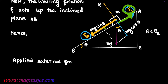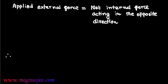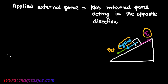At equilibrium, the applied external force equals the net internal force acting in the opposite direction. External force FEX acts down the inclined plane, while Mg sin theta also acts down and limiting friction FL acts up the inclined plane. Therefore, the net internal force acting upward is FL minus Mg sin theta, and FEX equals FL minus Mg sin theta.